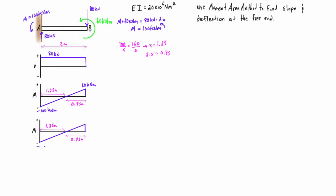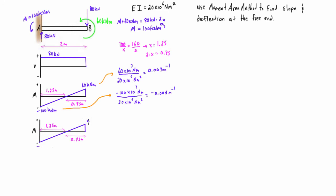Dividing each point by EI, we get 0.003 meters to the minus 1 and negative 0.005 meters to the minus 1. Now we have the M over EI diagram — we've divided everything by EI.